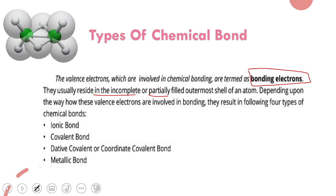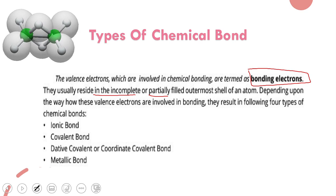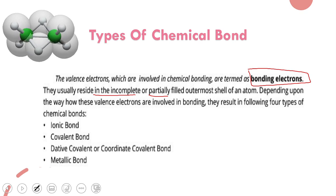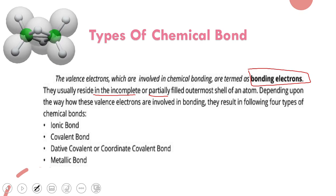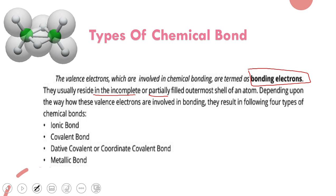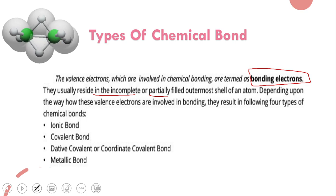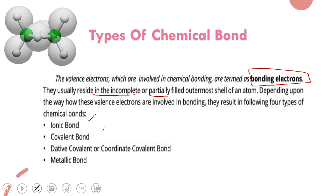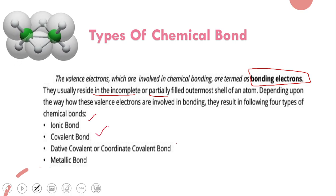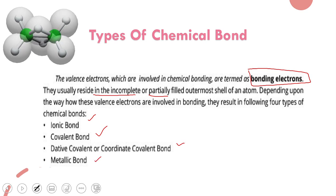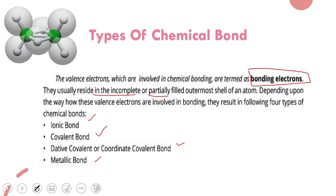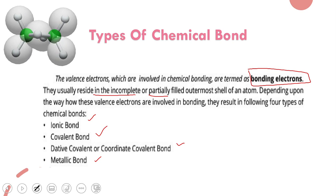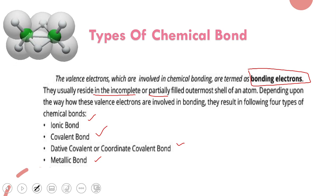Depending on how these valence electrons combine and get involved, we have four different types: the first one is ionic bond, second is covalent bond, third is dative or coordinate covalent bond, and fourth is metallic bond. We will study each of these in detail in our next lectures.